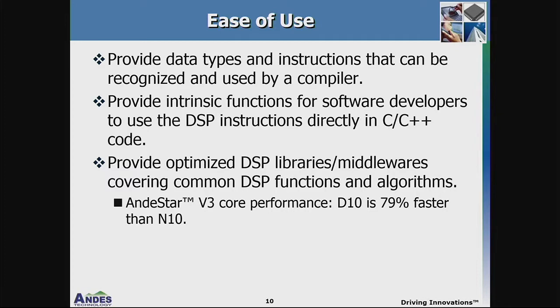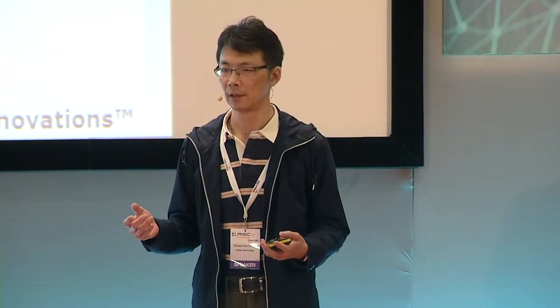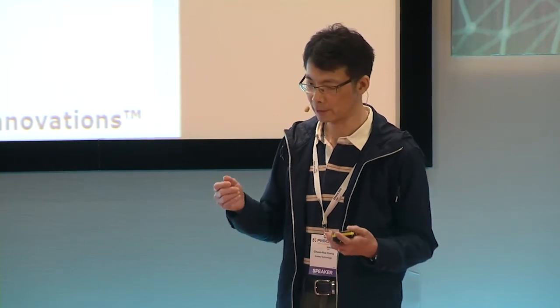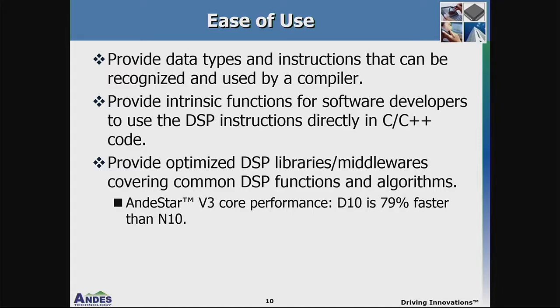To help facilitate the use of these DSP instructions, we are taking three strategies. The first is to provide data types and instructions that can be recognized and used by the compiler — ideally compilers generate these instructions automatically without requiring the programmer to do so. The second is to provide intrinsic functions for software developers to use DSP instructions directly in high-level language programming like C and C++. The third is to provide optimized DSP libraries or middlewares for more complex or common DSP functions and algorithms.